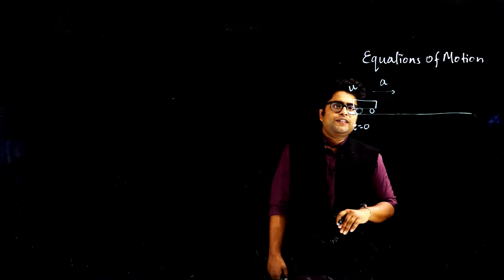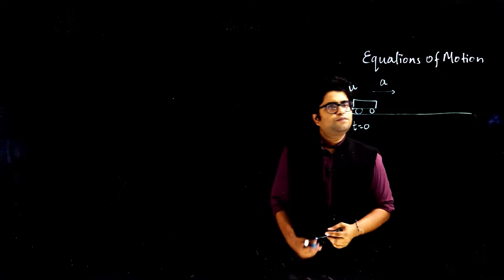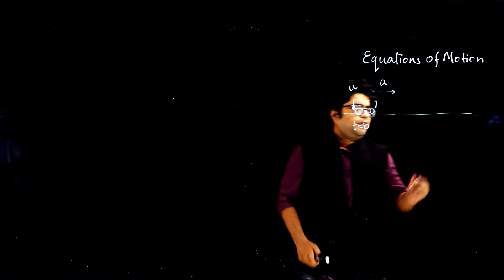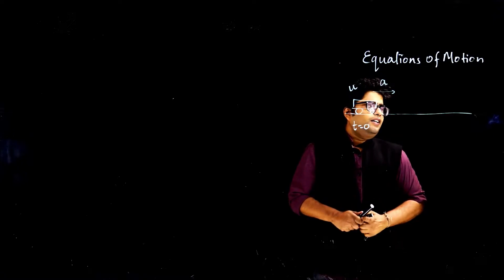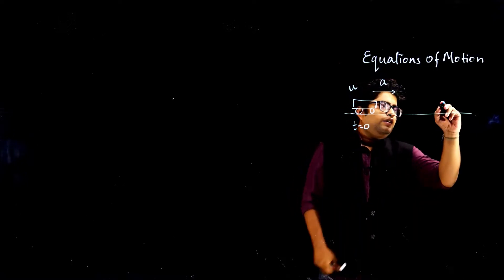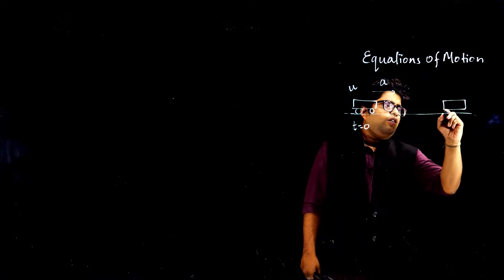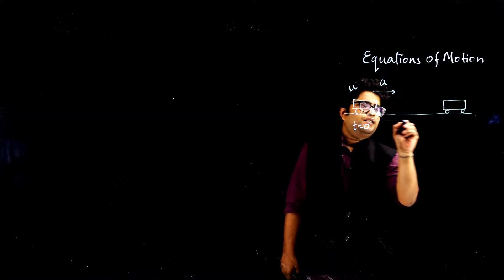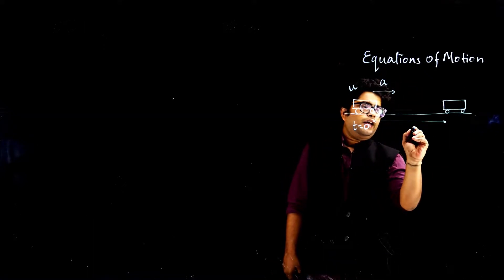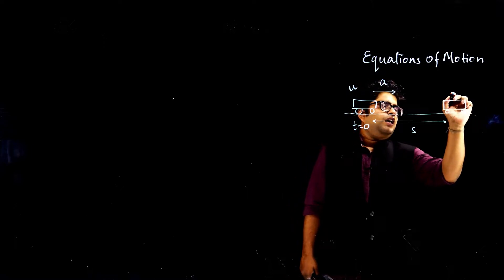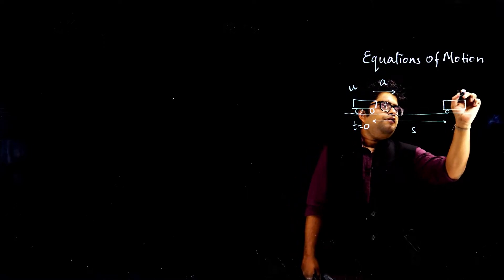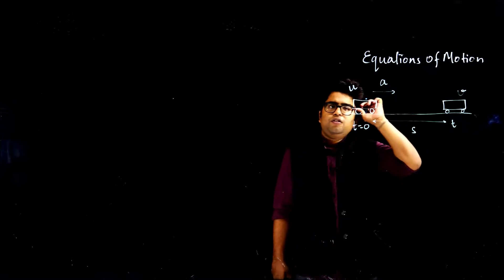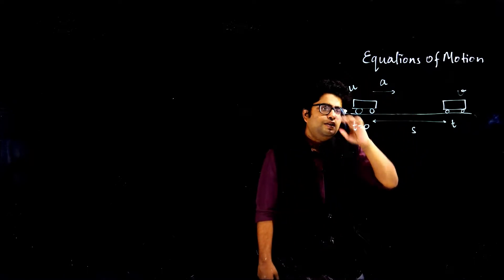What's the meaning of uniform acceleration? That means the velocity is changing uniformly. After some time, I observe that my car is now at a different location — at a displacement s — and the velocity of the car is v. The time here is now t instead of 0.